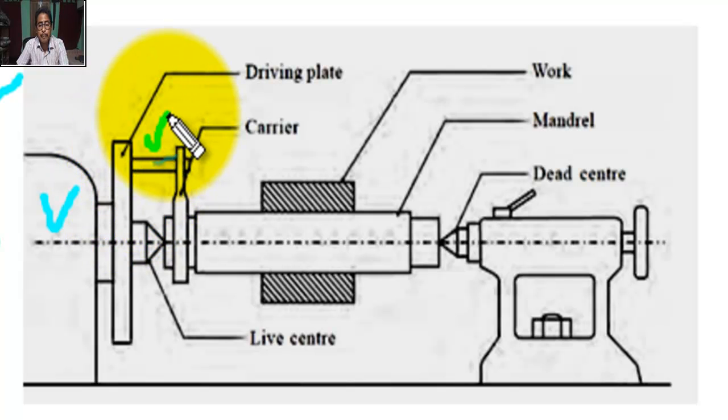And the projected pin of the diving plate strikes the tail end of the lathe dog, which then rotates with diving plate, causing the job to rotate.